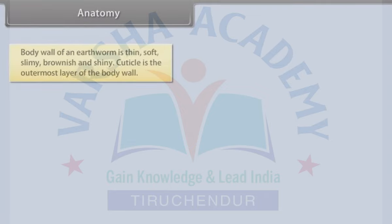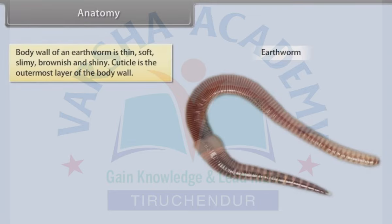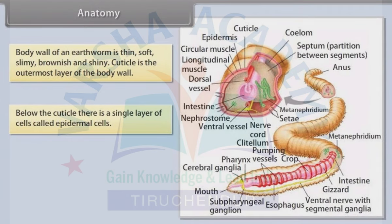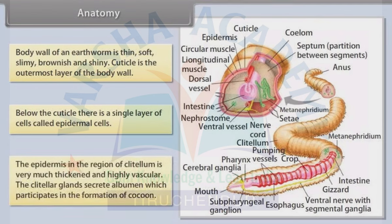Anatomy: The body wall of an earthworm is thin, soft, slimy, brownish and shiny. The cuticle is the outermost layer of the body wall. Below the cuticle there is a single layer of cells called epidermal cells. The epidermis in the region of the clitellum is very much thickened and highly vascular. The clitellar glands secrete albumin, which participates in the formation of cocoon.